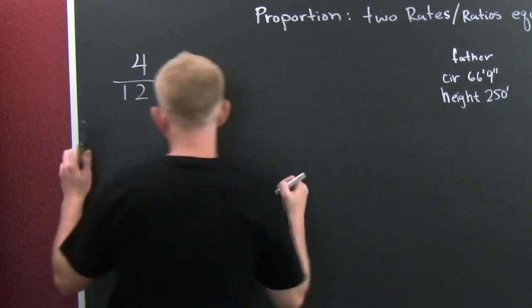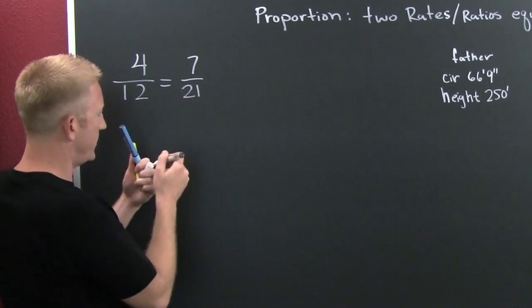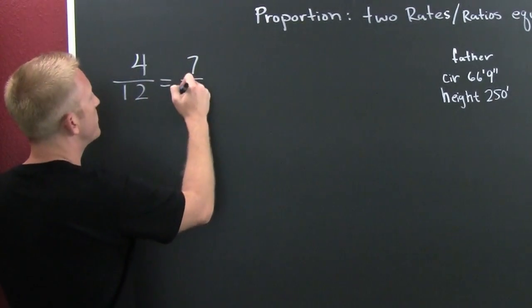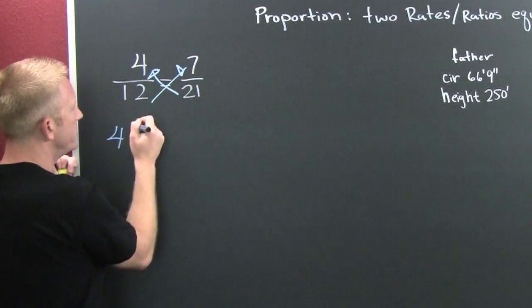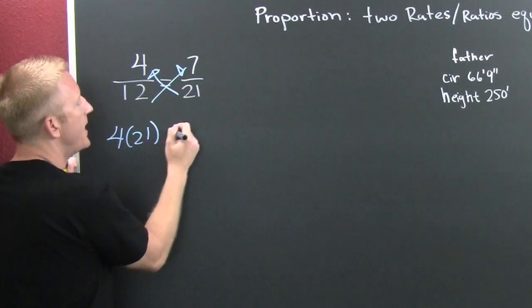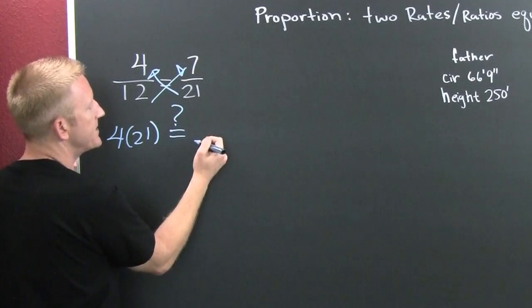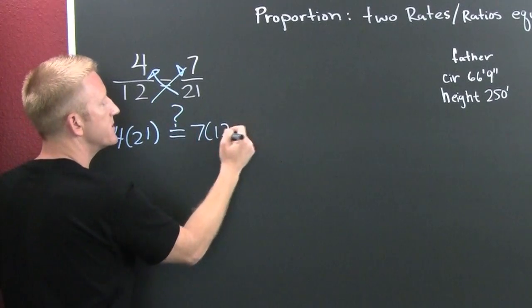So, let's go and let's do this. Yes! I want to cross multiply. This times that, and then this times that. So, I'm looking at 4 times 21, and I want to see whether or not that's the same as 7 times 12.